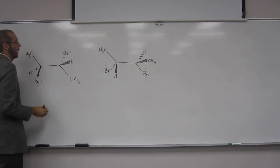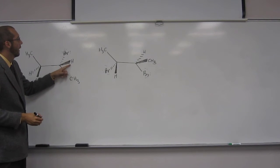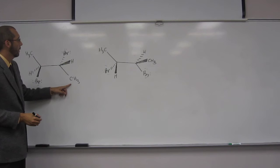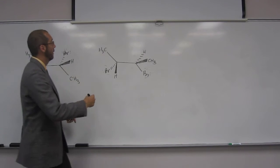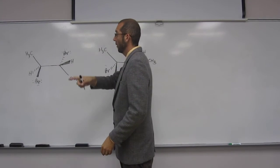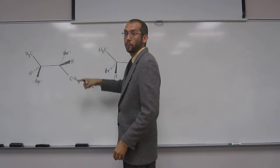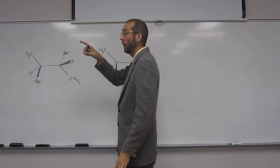So in this case, we've got bromine back, hydrogen forward, methyl group down in the plane, right? So we've got bromine, hydrogen, methyl in this sort of pattern. Do you guys see that? Okay, in a counterclockwise pattern.